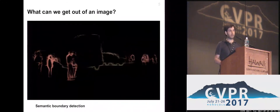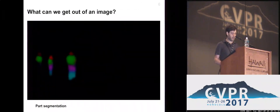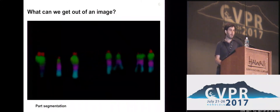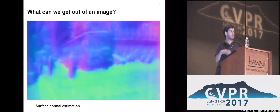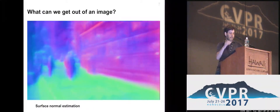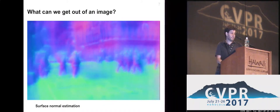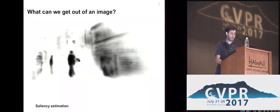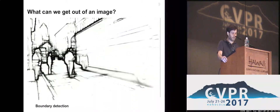We have semantic boundary detection, where we want to find the boundaries between different instances. We might also want to go beyond that and find the parts of objects present in our scenes — the head, torso, limbs, and different parts of humans. Then there are also many other tasks not necessarily tied to a particular object. For instance, surface normal estimation, where we get geometric properties of the underlying scene — namely the orientations of objects — which may help us walk around in a scene or manipulate objects. We also have saliency estimation, where without being fixed to a particular object we find out what is salient in an image and what we should be attending to, as well as boundary detection where we find boundaries between different regions without being tied to a particular object.